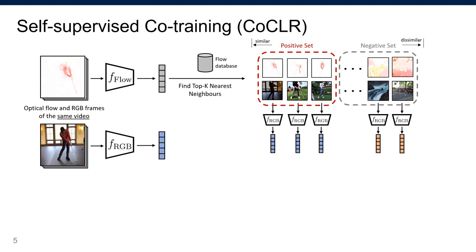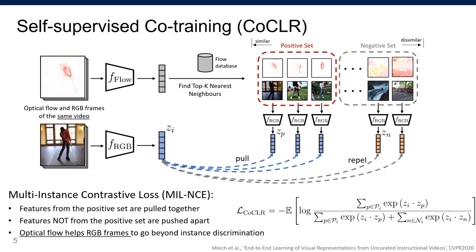Then in the RGB space, we can use the top k instances as a positive set to train our contrastive loss. To let the contrastive loss support multiple positives, we use multi-instance contrastive loss.